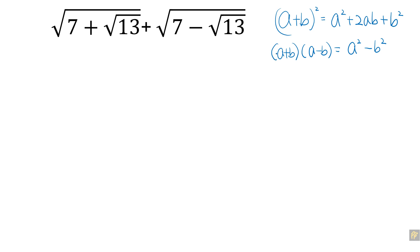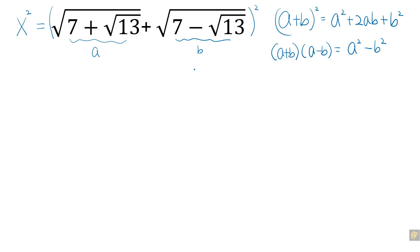Now, in order to find the value of the number that is given, we are going to treat this whole expression as x. What I'm going to do in order to simplify this — I'm going to square it, meaning that this whole expression will be squared. We are going to treat the first term as a and the second term as b.